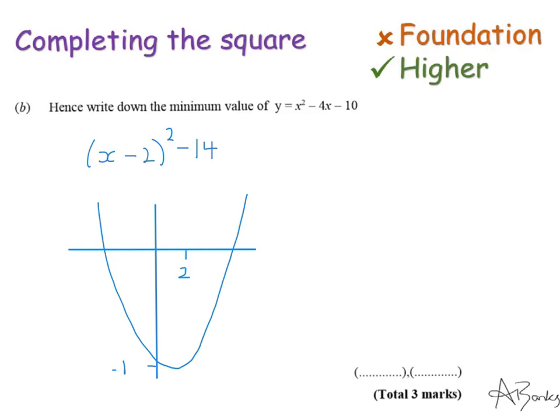So it's just the number on the end. The minimum point of my graph, the minimum value, is just 2 minus 14. If you don't know your transformations of graphs, don't worry. All you need to remember is that the minimum value is the opposite to what's in the bracket and then the number on the end.